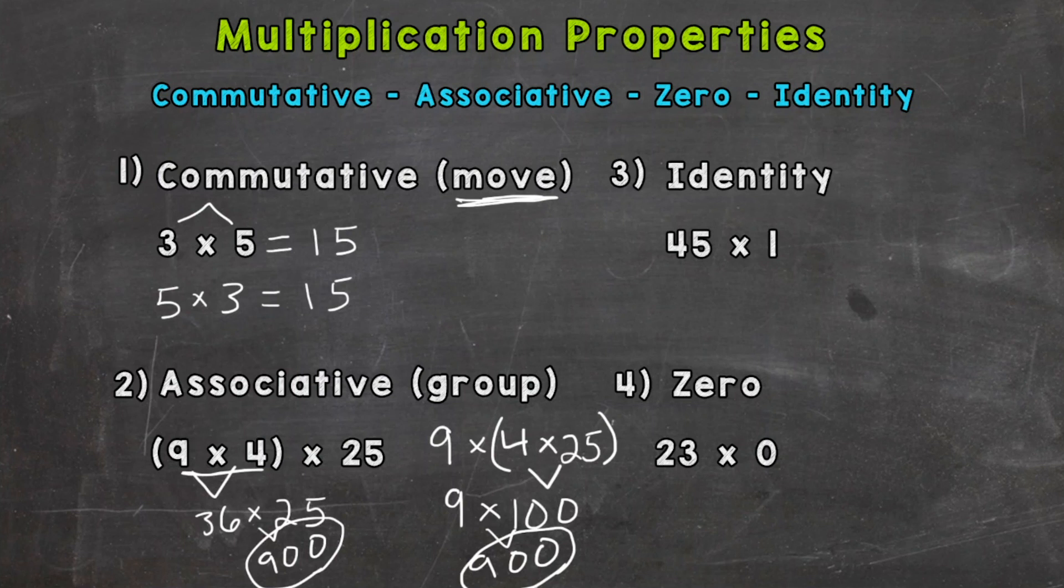Now three, we have the identity property of multiplication. The identity property states that anything times 1 is that number itself. So 45 times 1 is going to give us 45. If we did 78 times 1, that would give us 78. So anything multiplied by 1 gives us that number itself.